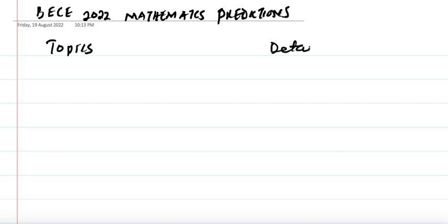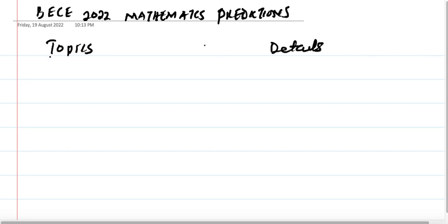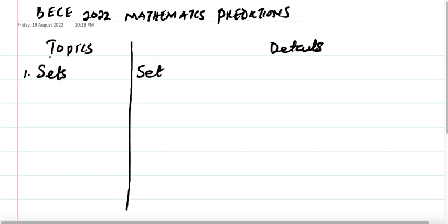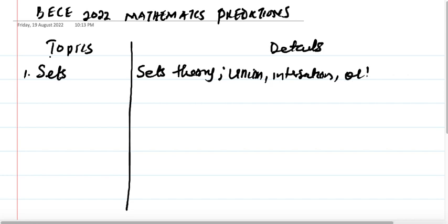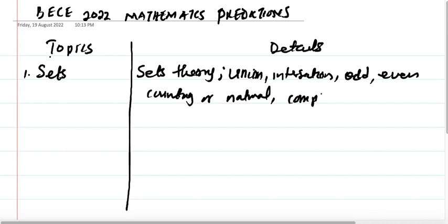Let's start with the first topic, which is Sets. Under set theory, we talk of union of sets, intersection of sets. We talk of numbers like odd numbers, even numbers, counting or natural numbers, and composite numbers.